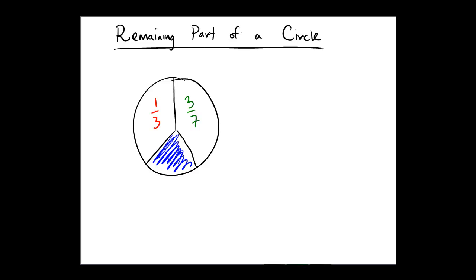So, we represent the entire circle by 1, and then we say that we are subtracting from that 1, 1/3, and we are subtracting 3/7. And then the question is, what is the remaining part after we have done this?